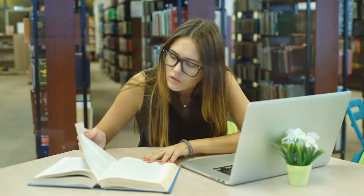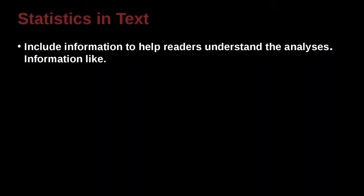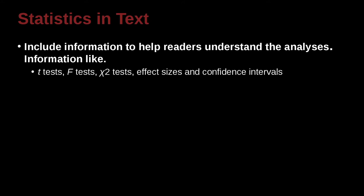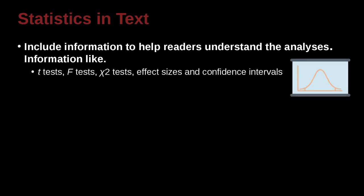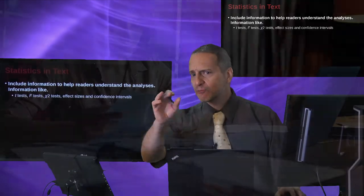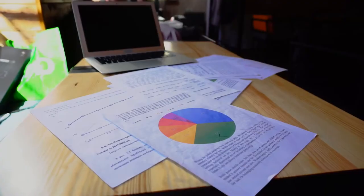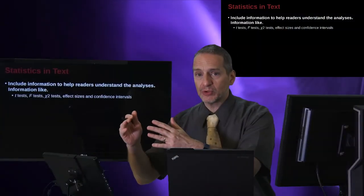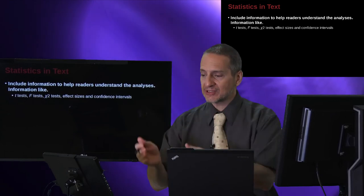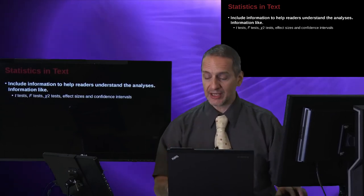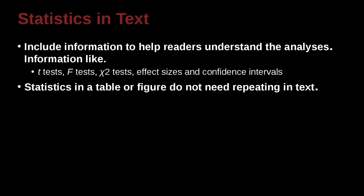Statistics inside your text. Include information to help readers understand the analysis, and that would include information like t-test, f-test, chi-squared test, effect sizes, and confidence intervals. And here the main point is, if I read your manuscript, if I read your paper, if I read your thesis, can I really understand how you took the data and came to this answer? How did you get this number? How did you arrive at this number? And that's why you would specify very clearly, did I use a t-test? Did I use an f-test? Did I use a regression? How did I come to this ending number? You don't need to explain all the details, just what did you do? What were the basics?